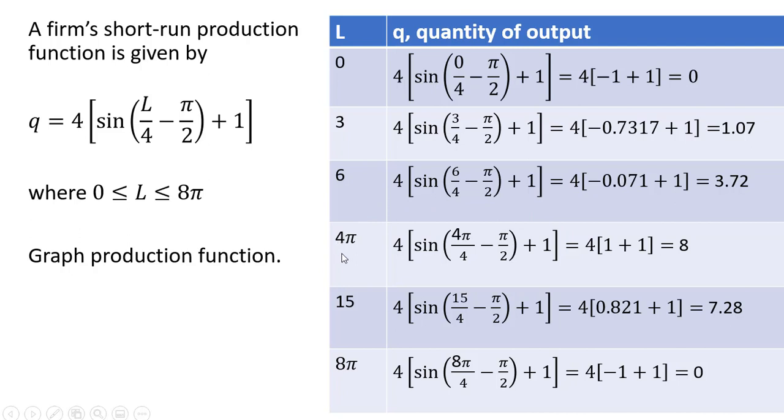If labor is 6, if labor equals 4 times π, output is 8. And finally, if labor is 8π, output goes back to zero.